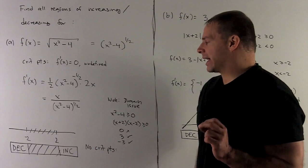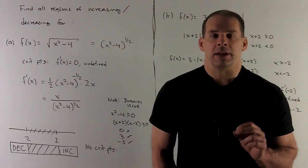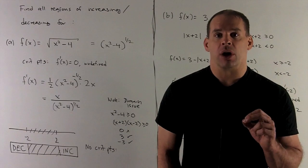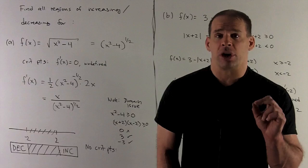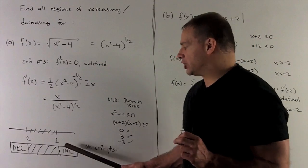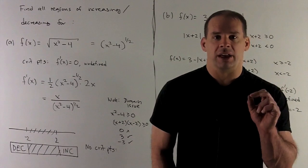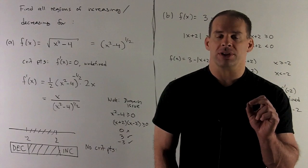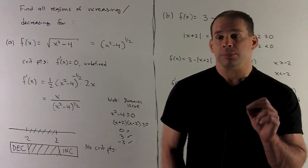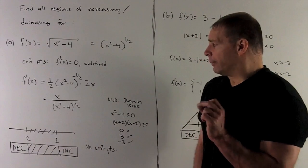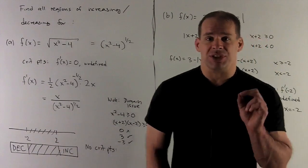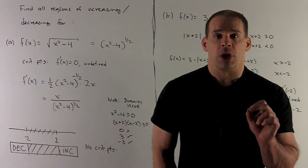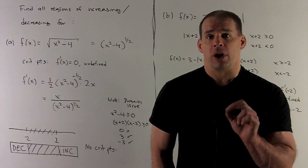Cleaning that up gives f′(x) = x over the square root of (x² - 4). Plugging in plus or minus 2 causes division by zero, giving critical points, but since those are endpoints of our domain regions they don't help divide increasing from decreasing. Setting the numerator to zero gives x = 0, but x = 0 is not in our domain, so we have no critical points.